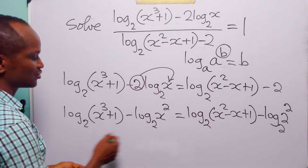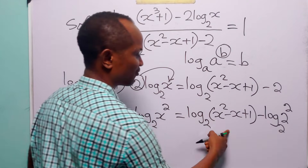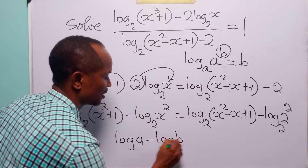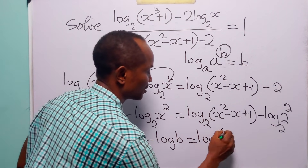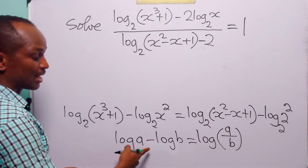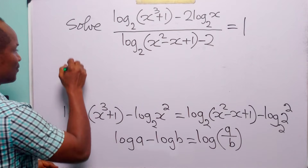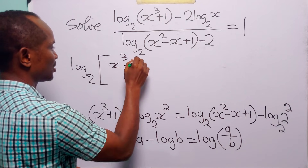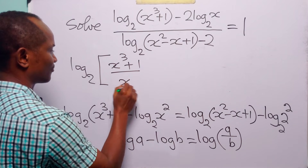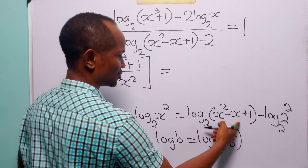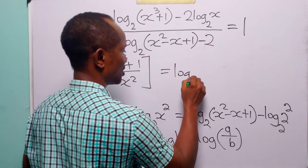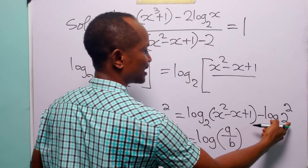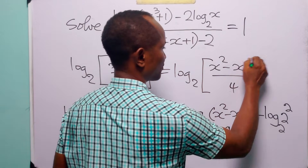Now the next thing we are going to do is to subtract this logarithm from this one and subtract this logarithm from this one. You have to remember that log to base 2 of x squared equals log to base 2 of x cubed plus 1 divided by x squared. Applying this on the left hand side, we can write this as log to base 2 of x squared minus x plus 1 divided by 2 squared.